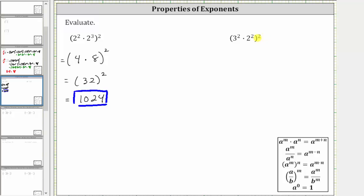For the next expression, we have the square of three squared times two squared. Again, following the order of operations, we begin by simplifying inside the parentheses. We simplify the exponents before multiplying.